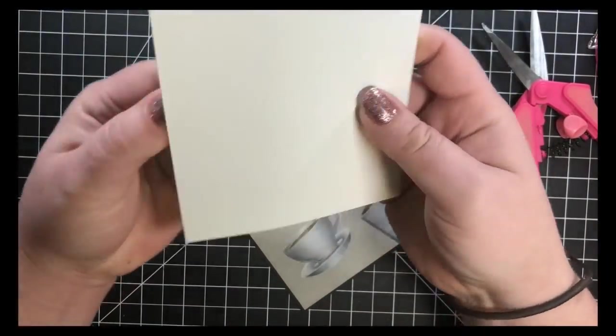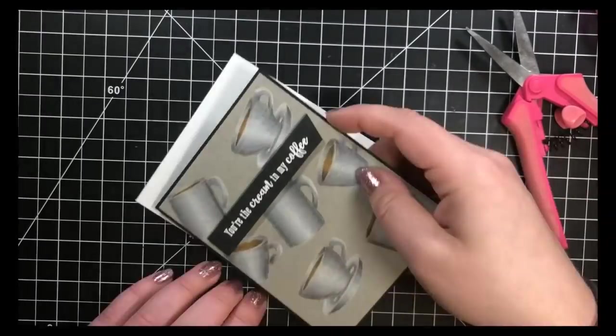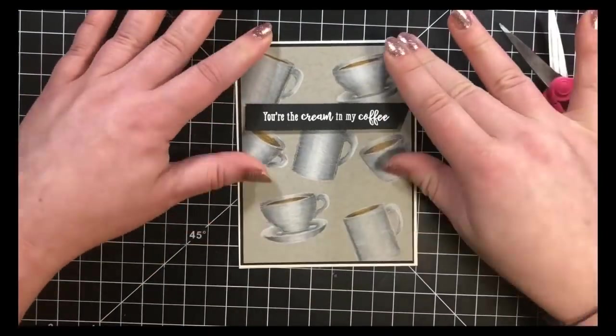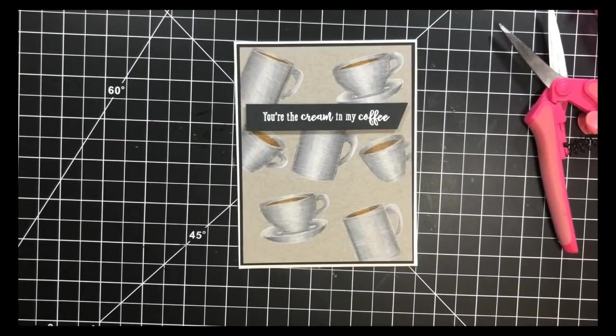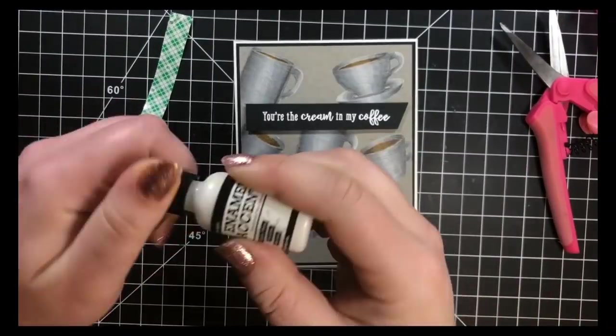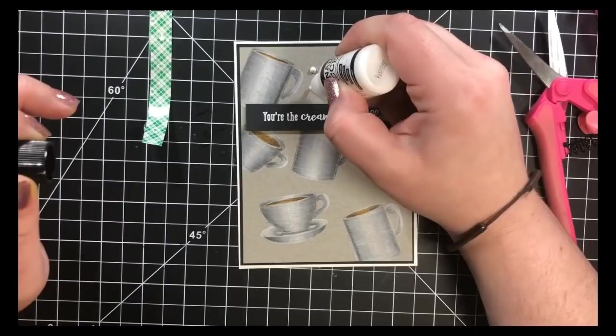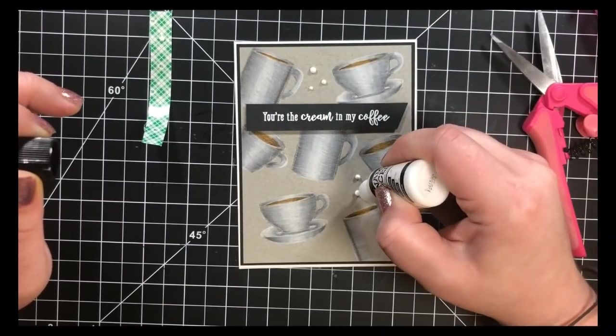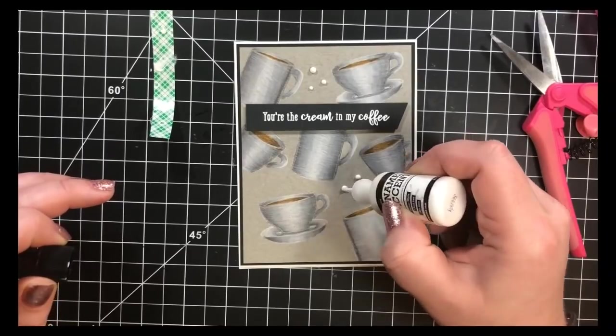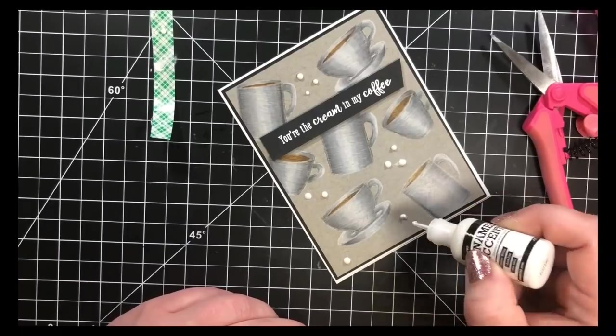So in order to fill in that area, I just used some enamel accents by Ranger. These are very similar to like nuvo drops. I have all of the colors, so I just squeeze a little bit out on a scrap piece of paper, make sure that there's no air bubbles, and then I just place those throughout the panel just to fill in some of those blank areas. And that is it for this one. Thank you guys so much for stopping by, and I hope you guys have a wonderful day.